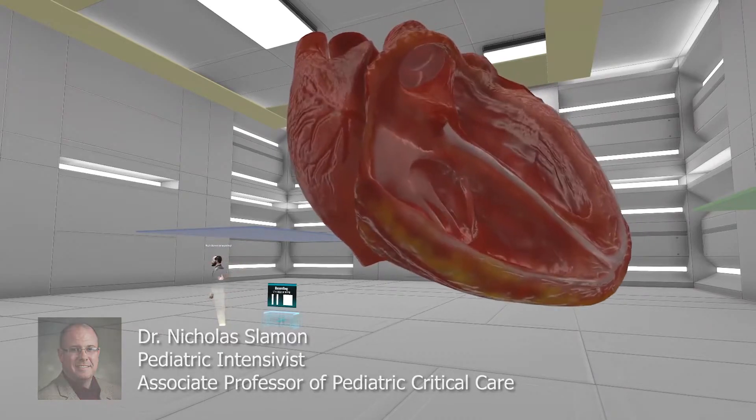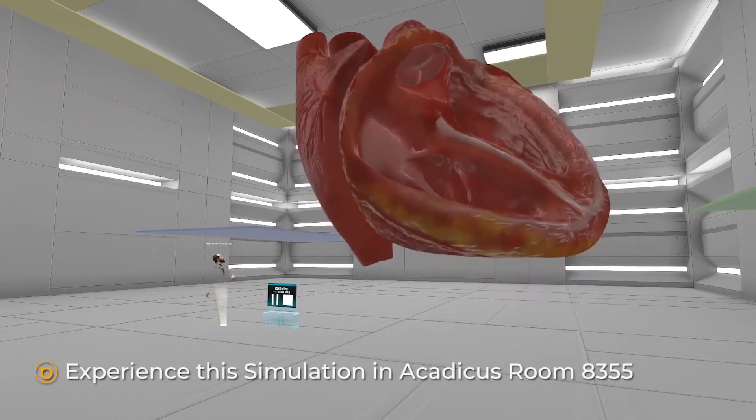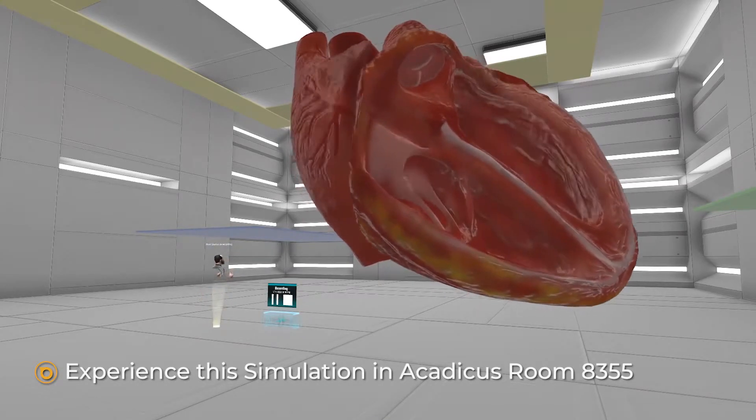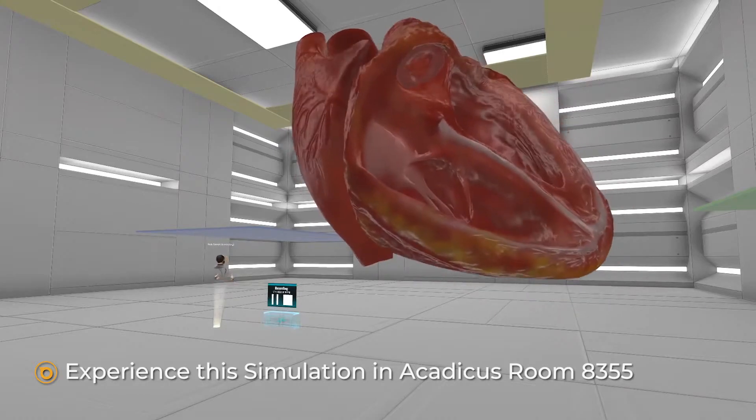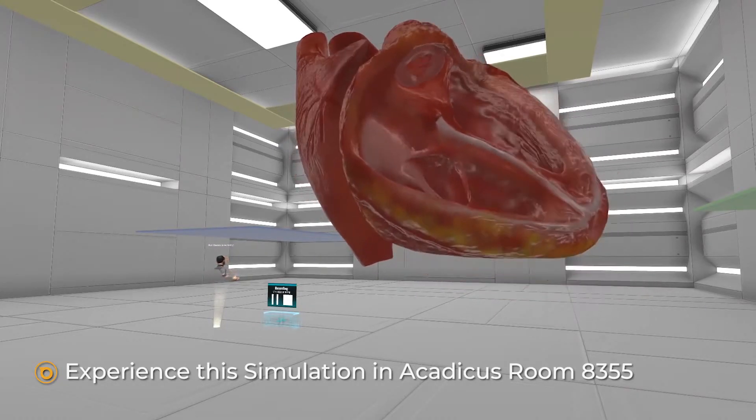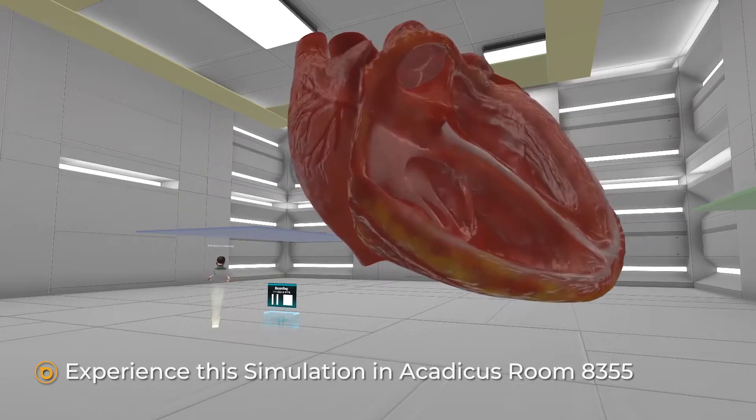And as you can see behind me, Acadicus is really innovative. They've created a 3D working model of the heart, and they've set up these color-coded platforms so that we can jump from one to another to get multiple views from the outside of the heart as well as within the heart.